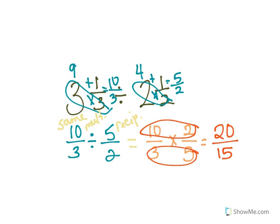Oh, that's improper. So what do I have to do? Turn it into a mixed number by dividing. Twenty divided by fifteen.